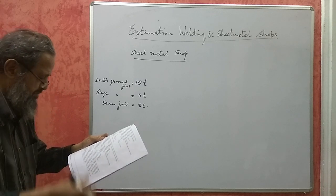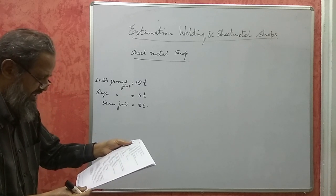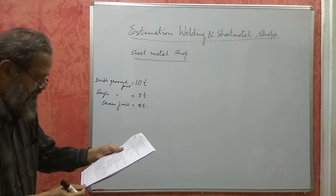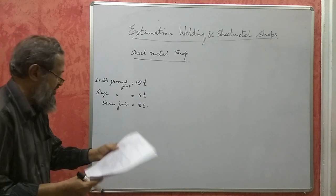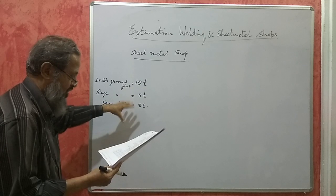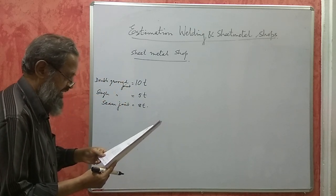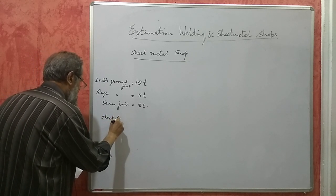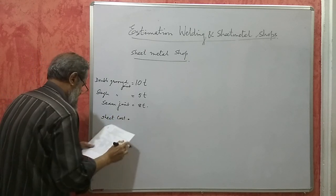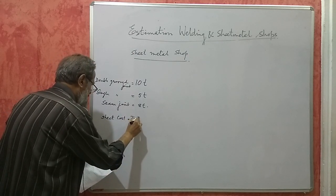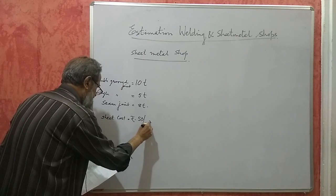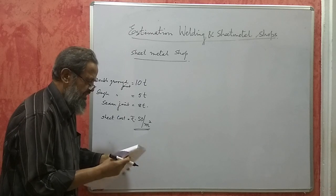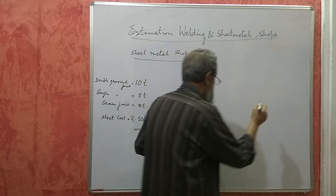Now we take problem number 9 from the question bank: estimate the cost of metal sheet for preparing a funnel as shown in the figure. Assume wastage of metal as 10%, and the cost of sheet is rupees 50 per square meter. A sketch of the funnel is given.